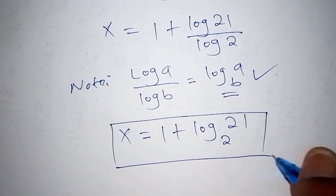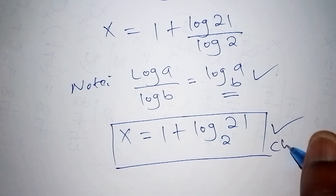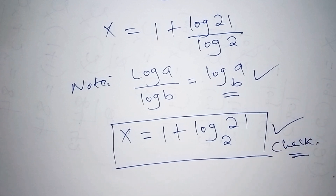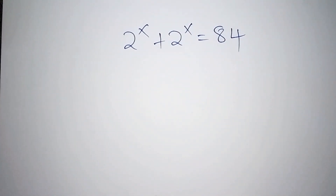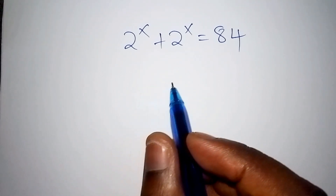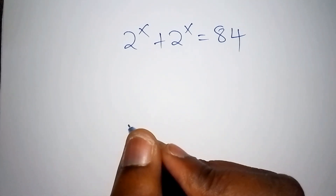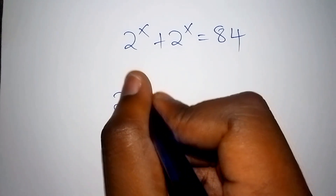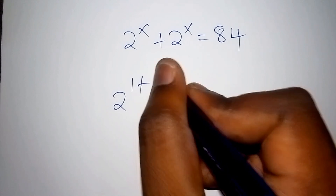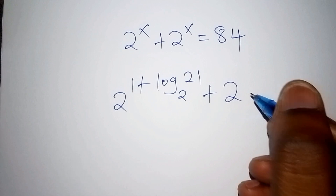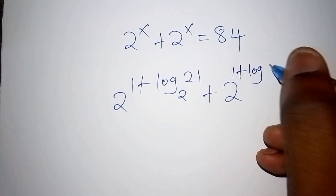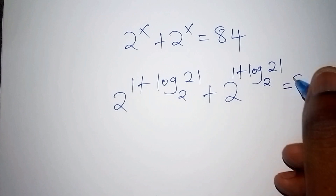This is our correct answer for the value of x. Let us verify: substituting back, we have 2 to the power of (1 plus log base 2 of 21) plus 2 to the power of (1 plus log base 2 of 21) should equal 84.